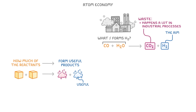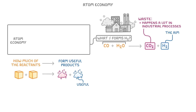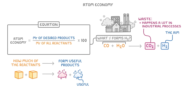So in this case, that would be what percentage of the carbon monoxide and water is actually going to form hydrogen. We call this value the atom economy. And the official equation for it looks like this: we have to take the relative formula mass of the desired product, or products if there are more than one, and divide it by the total relative formula masses of all the reactants. Then we multiply it all by 100 to turn it into a percentage.